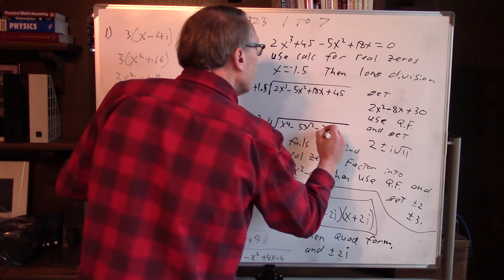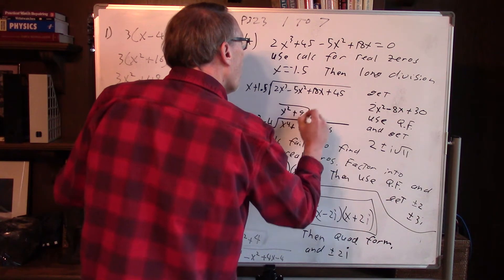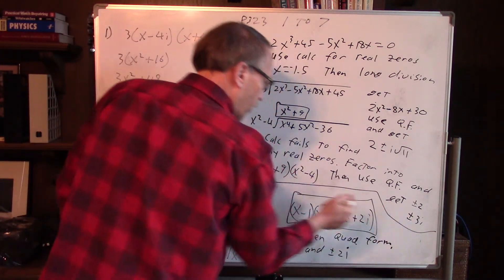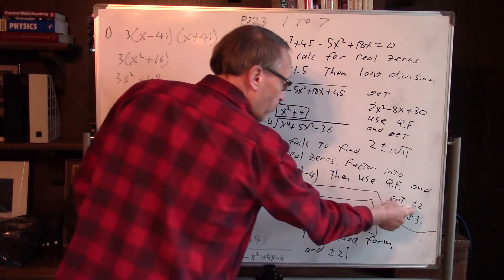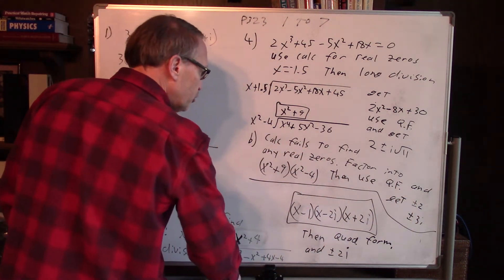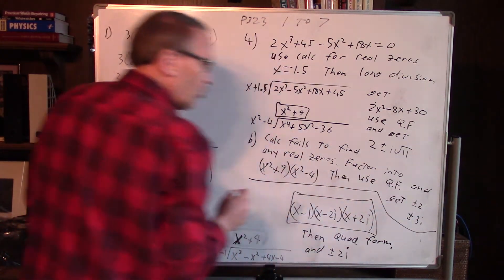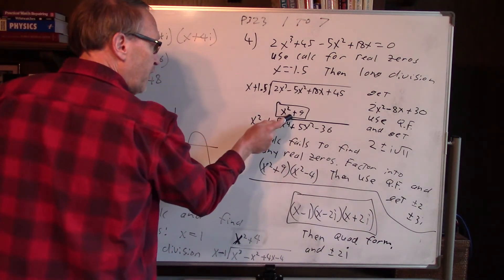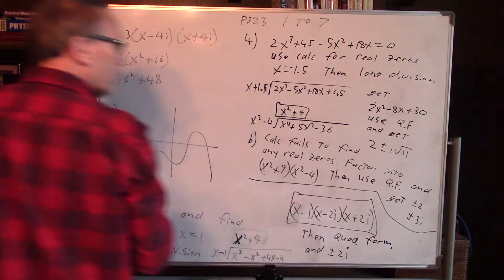That would give us the x squared plus 9. Then we could use the quadratic formula and get that one. So I should have found the two zeros at plus or minus 2. So the calculator shouldn't have failed. It did for me but it shouldn't have. Then you would get this after long division, then you could do that and get plus or minus 3i.